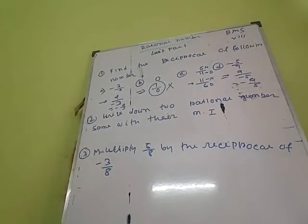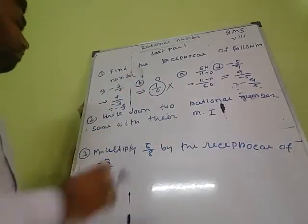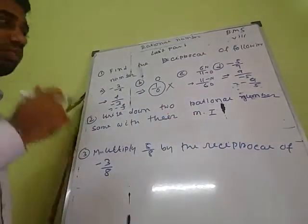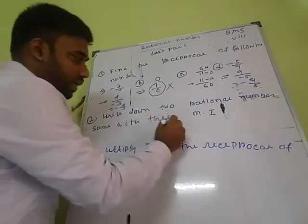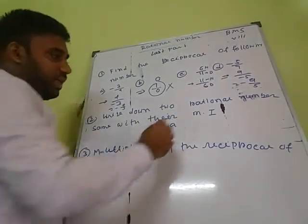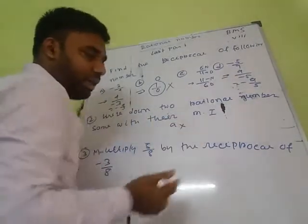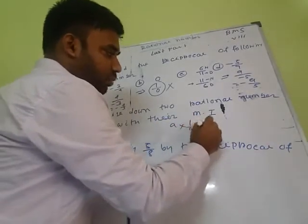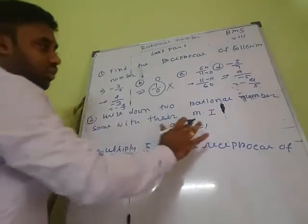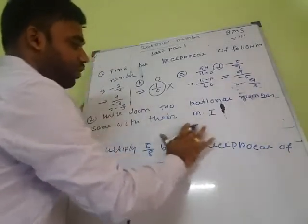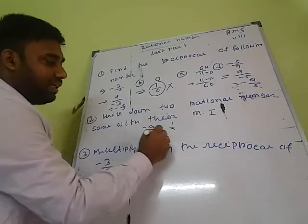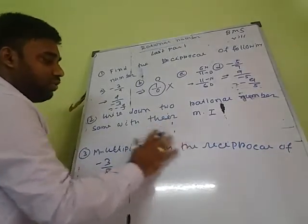Question number 2: write down the rational numbers that are their own multiplicative inverse. The multiplicative inverse of any number A is 1 by A, because A multiplied by 1 by A gives 1. The multiplicative inverse of minus A is minus 1 by A.